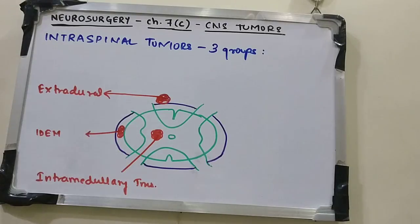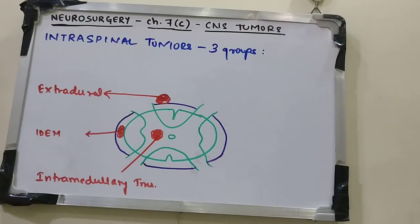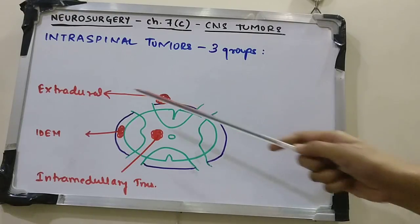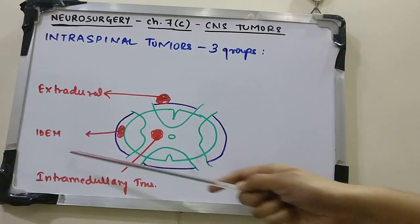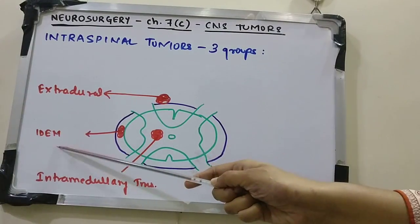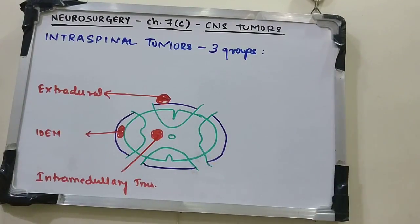Now we come to CNS tumors part C, where we are going to discuss intraspinal tumors. Intraspinal tumors are commonly divided into three groups: extradural, intradural extramedullary, and intramedullary tumors.